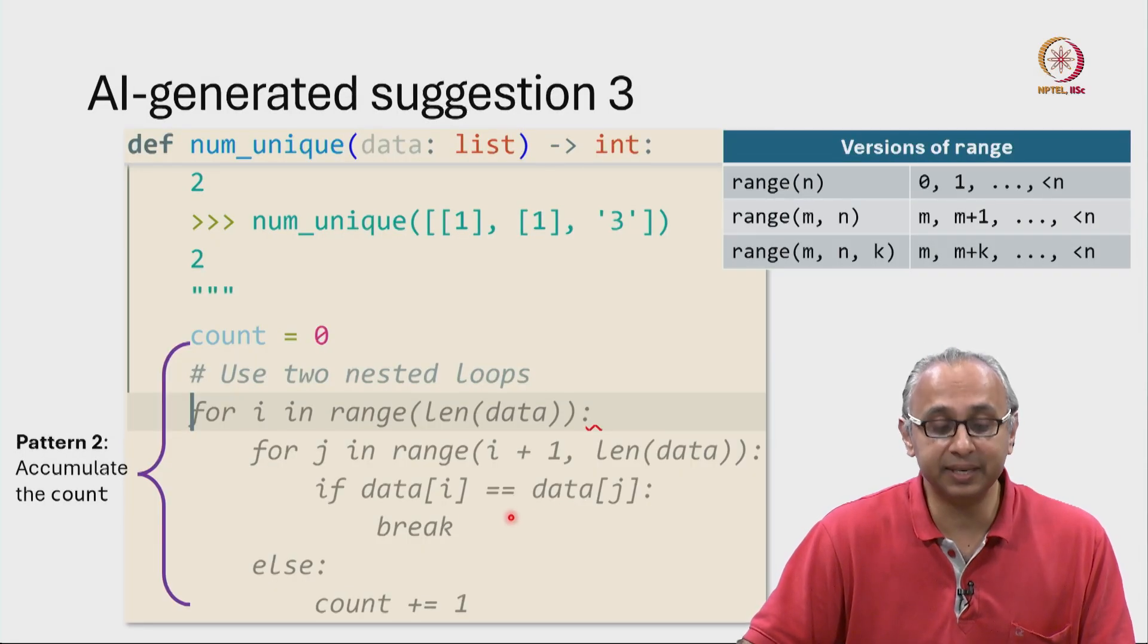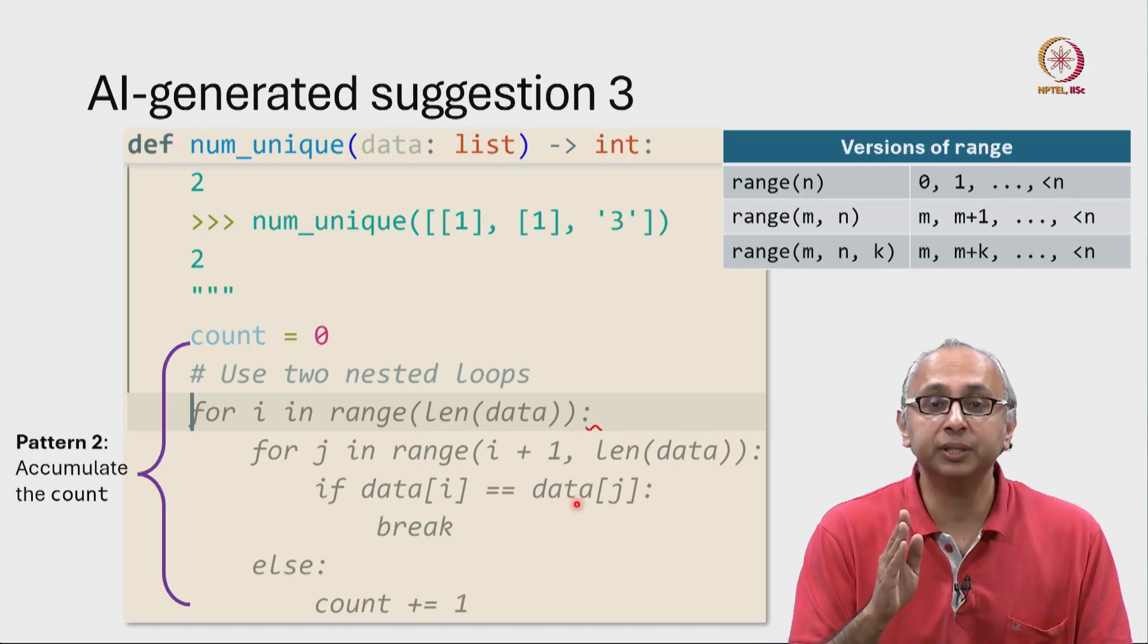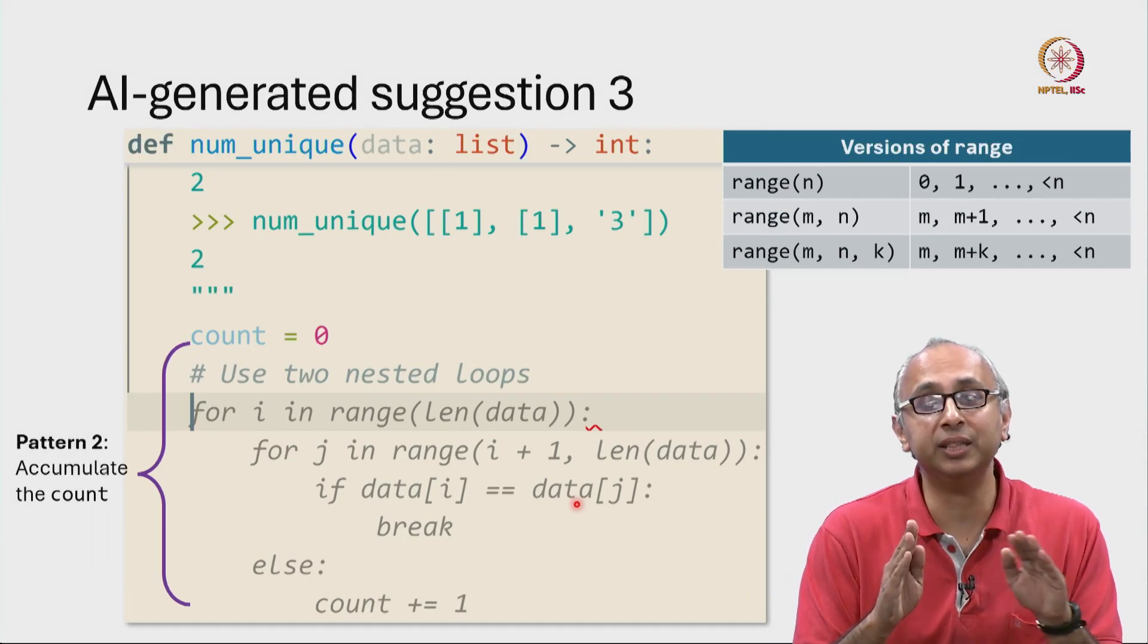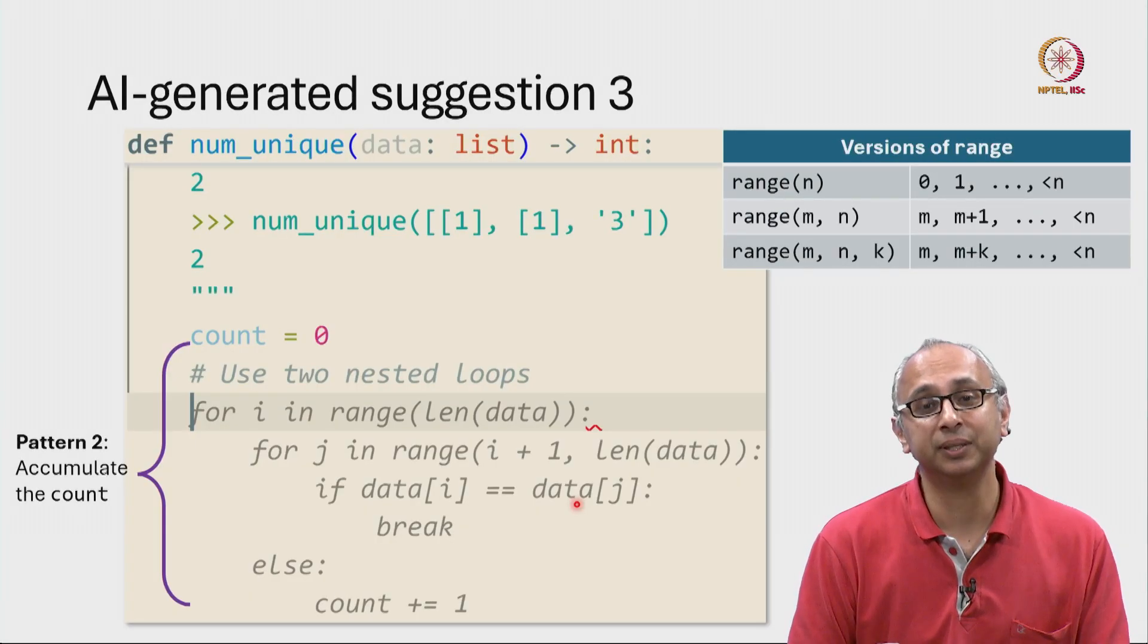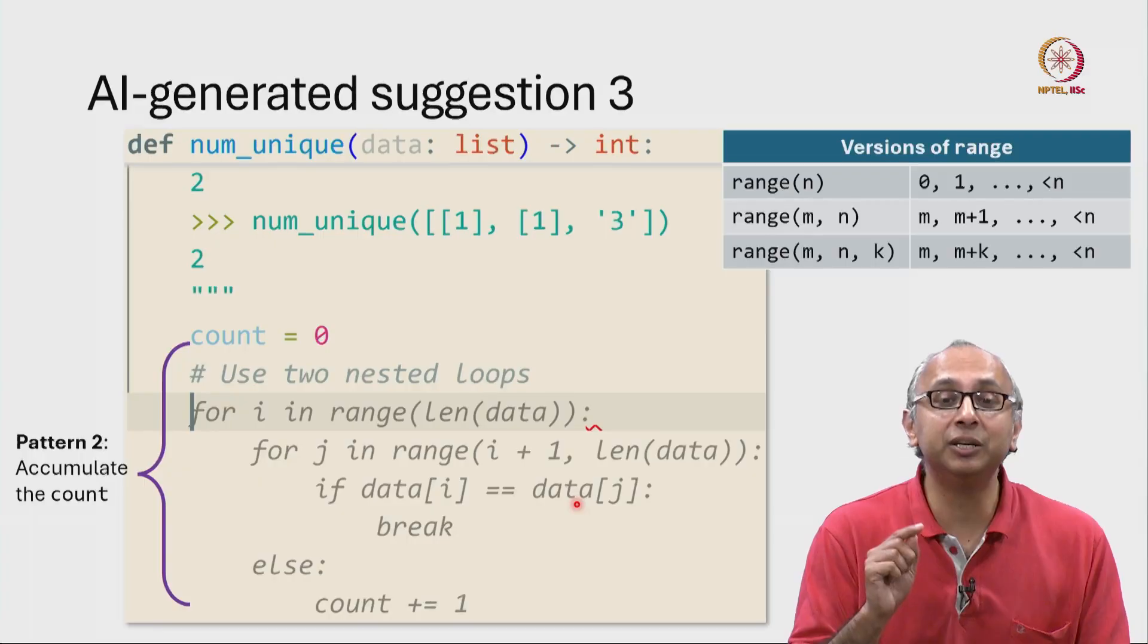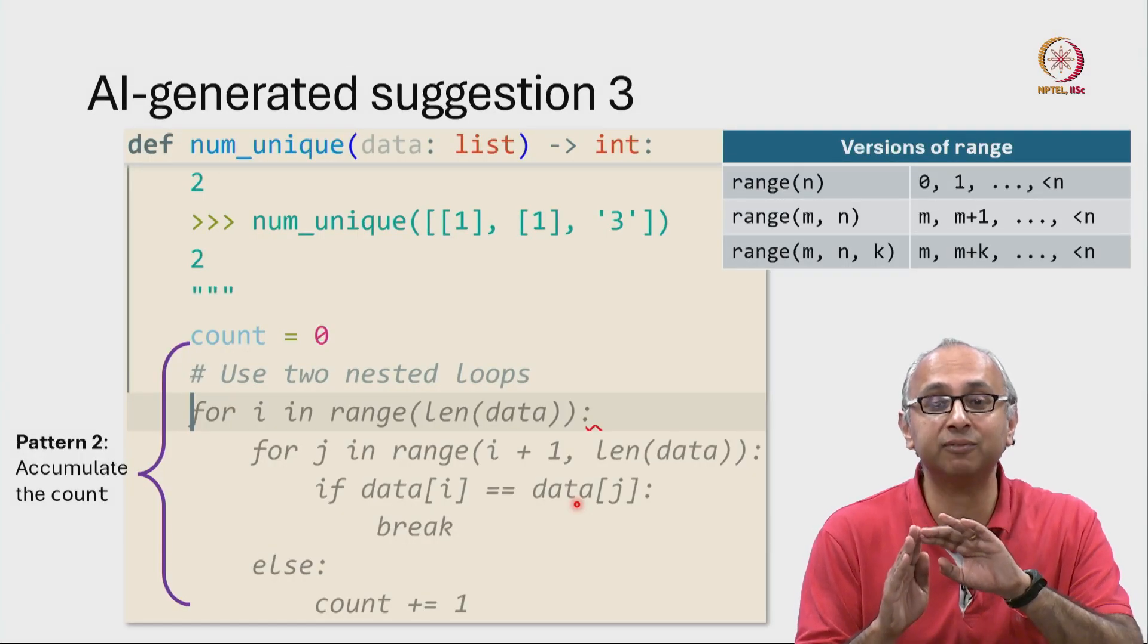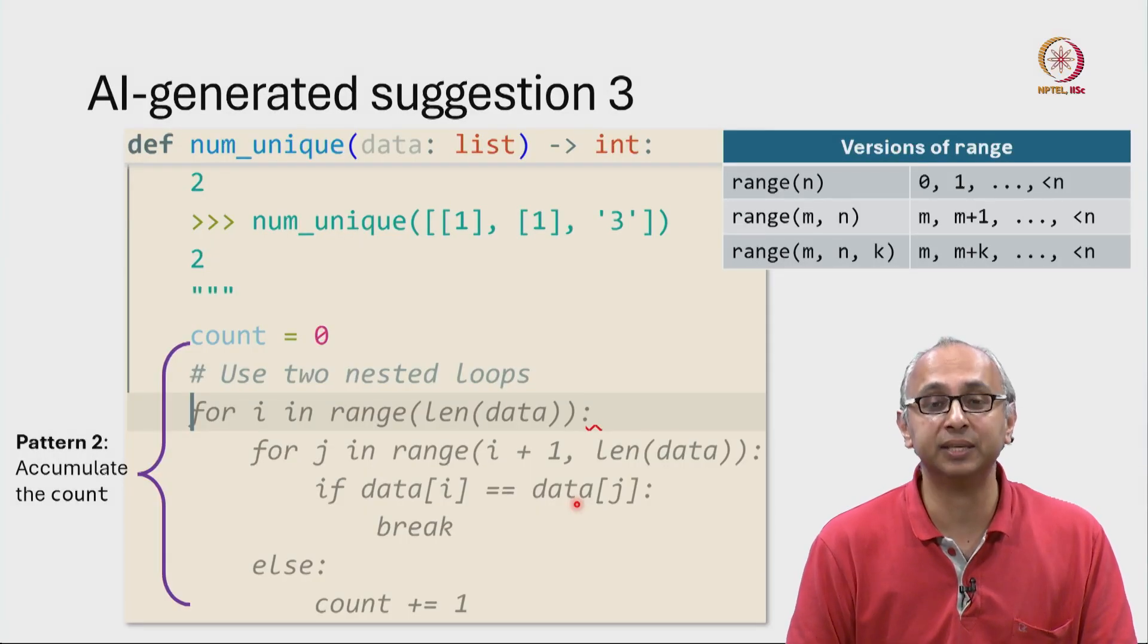So what this code is saying is if you encounter the value data i at a location j that is after i, meaning you found this value data i at a later location in the array, then don't increase the count. So this will only increase the count if you are unable to find this value at any later location in this list.